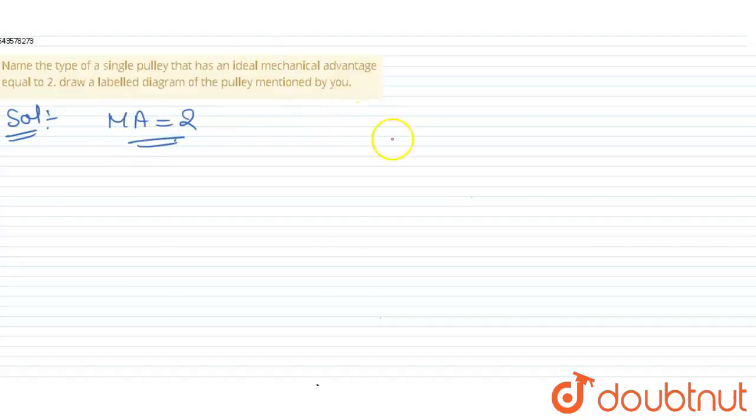First of all, mechanical advantage is given as effort upon load. Okay, now if we are talking about the pulley, we can say that the tension in the effort arm should be 2T and the tension in the load arm should be T.